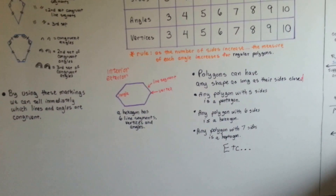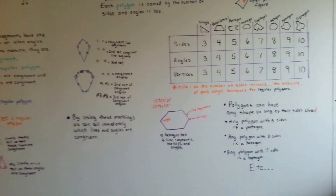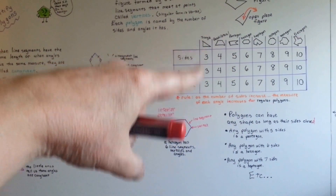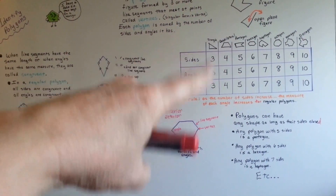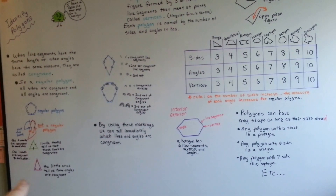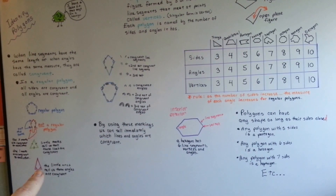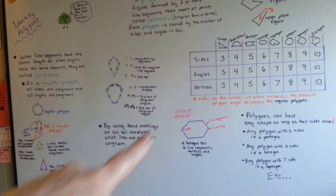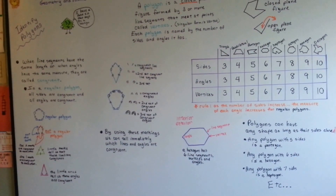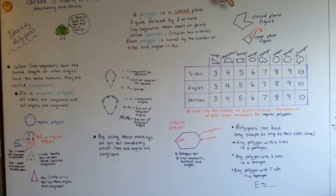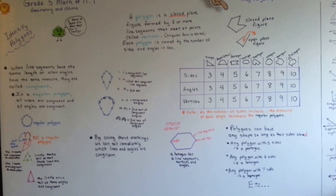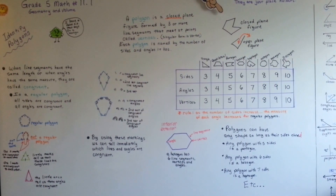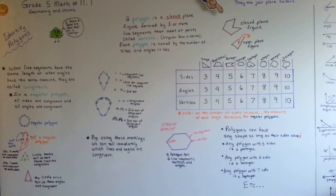They all have different names according to their sides, angles, and vertices — they're like a family. There's a bunch of different triangles; they all have three sides but different shapes. There are equilateral triangles, isosceles triangles, and right triangles, and we'll be talking about those next. If you get good at triangles, you'll be good at trigonometry. See you next video. Bye!